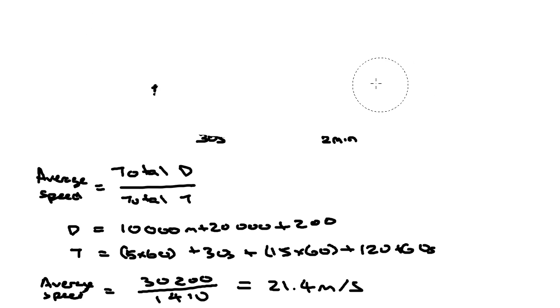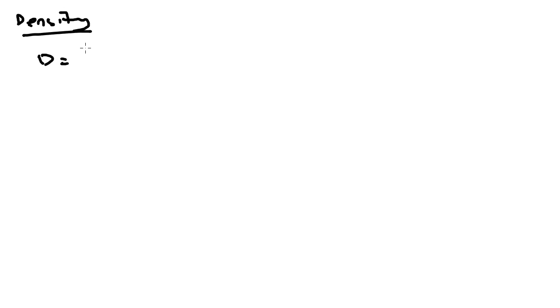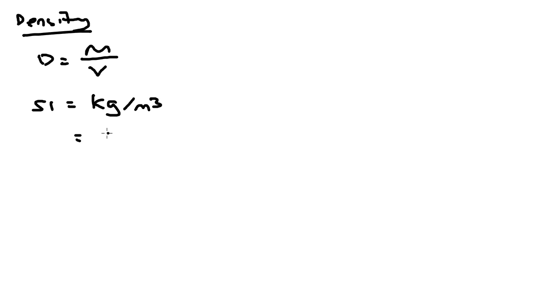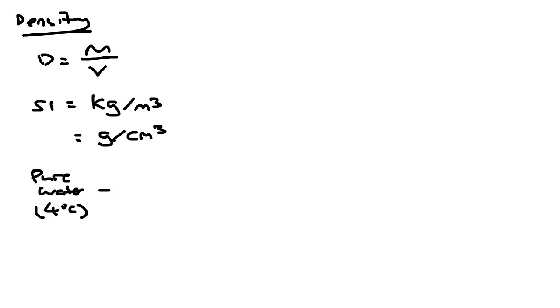The last thing we are going to look at is density. Density is defined as mass per unit volume. The SI unit is made up of the SI unit of mass, which is kilograms, and the SI unit of volume, which is meters cubed. A lot of times you will see measurements in grams per centimeter cubed. One reason for this is that pure water is sometimes used as a reference point, and the density of pure water at 4 degrees Celsius is 1.0 grams per centimeter cubed.